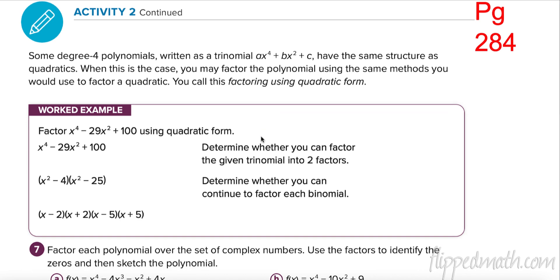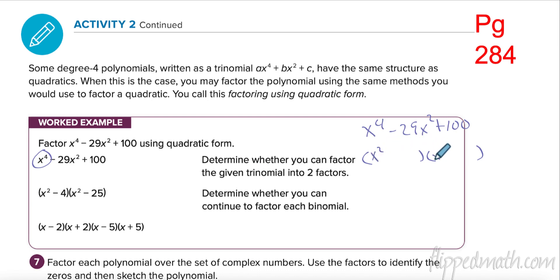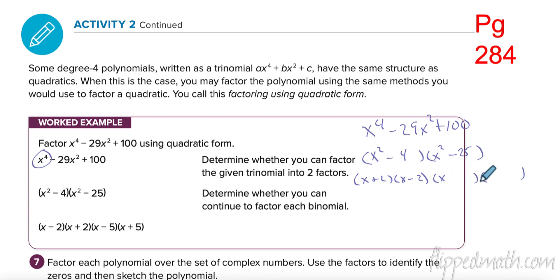On page 284 we have a fourth-degree polynomial. We can factor fourth degrees just like second degrees. I need two numbers that multiply to 100 and add to negative 29: negative 4 and negative 25. So the expression factors as (x² - 4)(x² - 25). Both are differences of squares: x² - 4 = (x + 2)(x - 2), and x² - 25 = (x + 5)(x - 5).